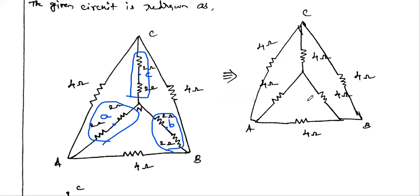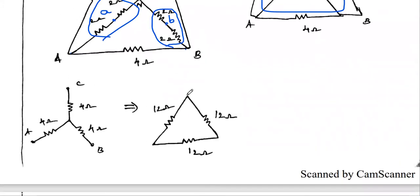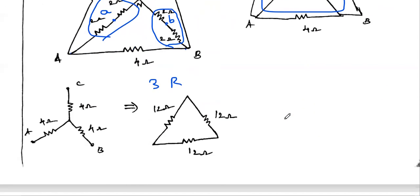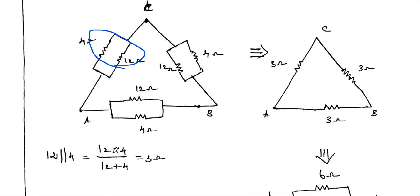Now the diagram has an outer 4 ohm delta and an inner 4 ohm star — which is the same configuration as problem one. Convert the inner 4 ohm star to delta: when values are equal, delta value = 3 × R = 3 × 4 = 12 ohms. So a 12 ohm delta appears inside the existing 4 ohm outer delta. Each branch now has 4 ohm and 12 ohm in parallel: (12 × 4) / (12 + 4) = 3 ohms.